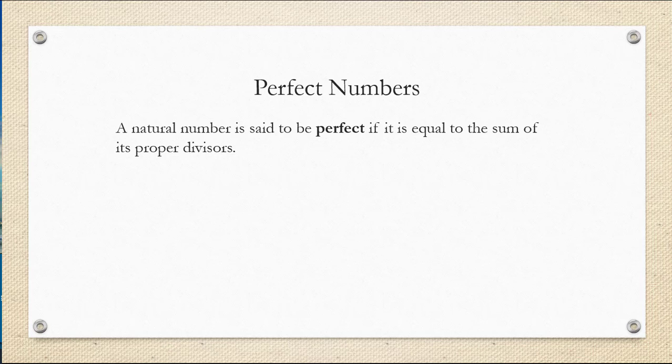A natural number is said to be perfect if it's equal to the sum of its proper divisors. Proper divisors means divisors that are not the number itself.